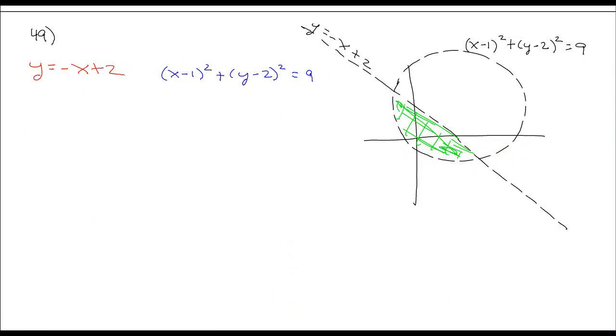Number 49 gives the graph of a circle equation and a linear equation. They're intersecting, and they want to know about the shaded region, about how to come up with two inequality statements so that we shade just the region, which I've shaded here in green.